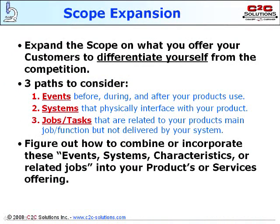Systematic innovation tool number 13 is scope expansion. Simply stated, scope expansion is expanding the boundaries of what you offer your customers. There are three paths to consider when using scope expansion: events, systems, and jobs or tasks. The goal is to combine or incorporate these focuses in your offering.